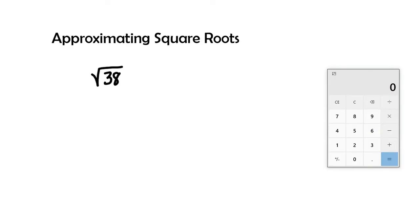Hey guys, in today's video we are going to learn how to approximate square roots. In our first example we have the square root of 38. When we're talking about approximating a square root, we are looking at getting an approximation, not the exact answer. To show that I'm approximating, I'm going to use a curved equal sign instead of the regular equal sign. I have a calculator off to the side mainly just to check my work.